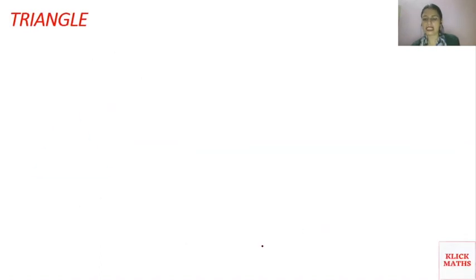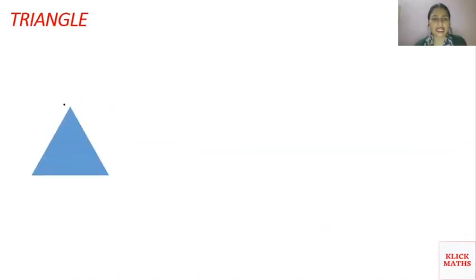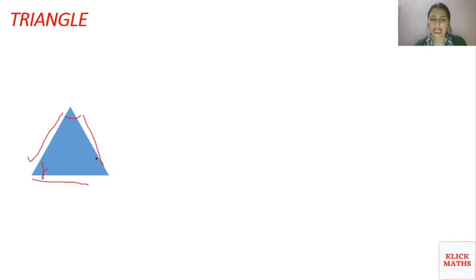The second shape is a triangle. A triangle is a closed figure made up of three line segments — one, two, three — and it has three angles: one, two, three.